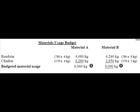Our material usage budget. We plan to produce 780 units of Roadstar, and each unit requires 6 kg of material A. 780 multiplied by 6 kg gives us 4,680 kg of material A to produce Roadstar. For Climber, producing 570 units, each requiring 4 kg, means we need 2,280 kg of material A. So to produce both models will require 6,960 kg of material A in total.